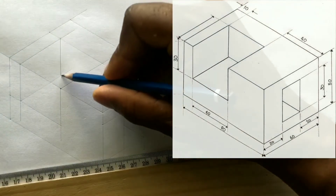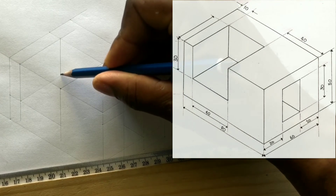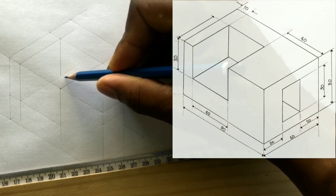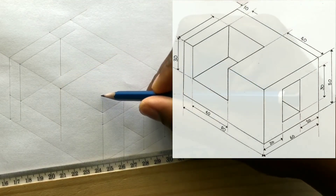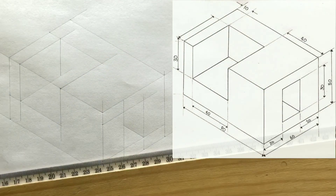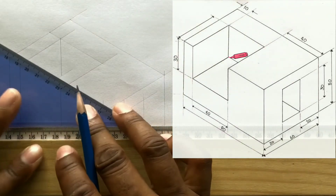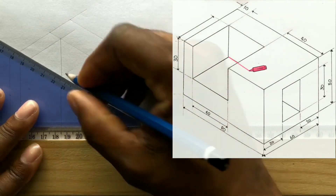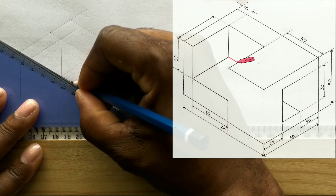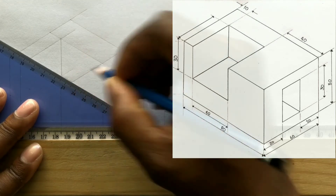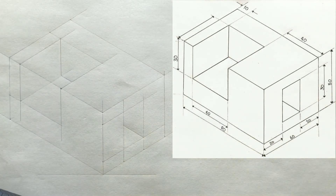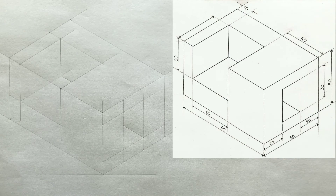Now from this intersection, you will draw a horizontal line in this direction. You can now go ahead and outline your isometric projection.